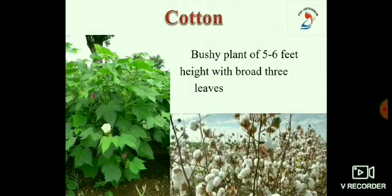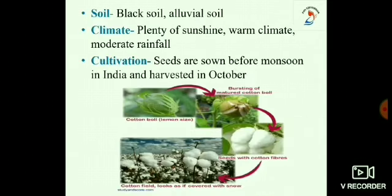Cotton is a bushy plant of 5 to 6 feet height with broad 3 leaves. It is grown in the fields. Cotton plants are usually grown at places having black soil and alluvial soil with warm climate and moderate rainfall. The fruits of the cotton plants are about the size of a lemon. Once the fruits are matured, the balls burst open and the seeds covered with cotton fibers can be seen.